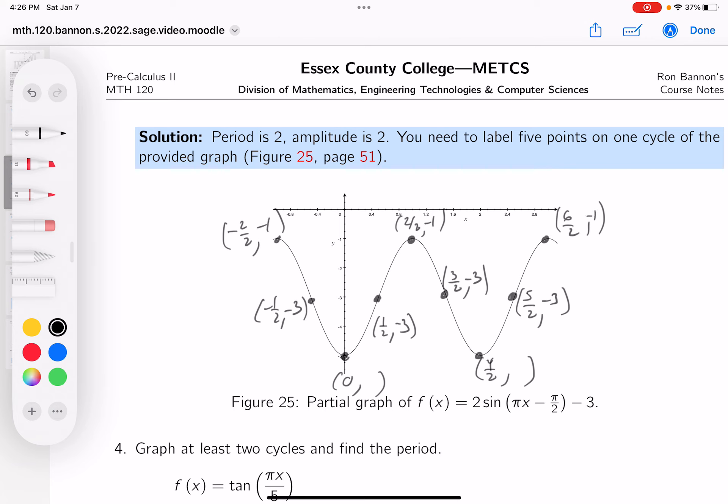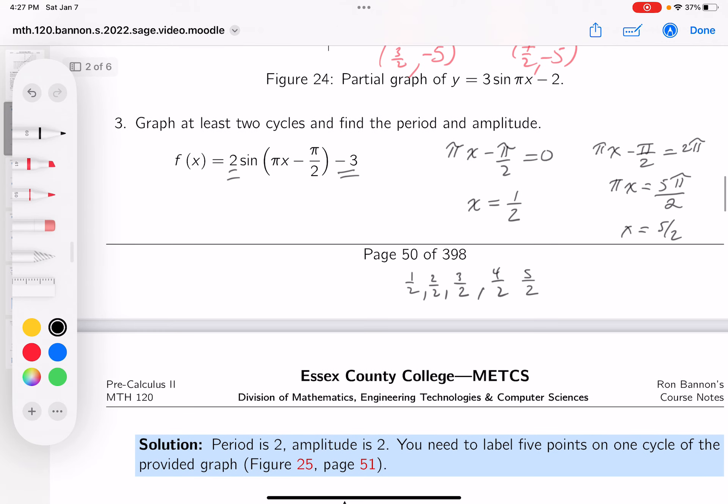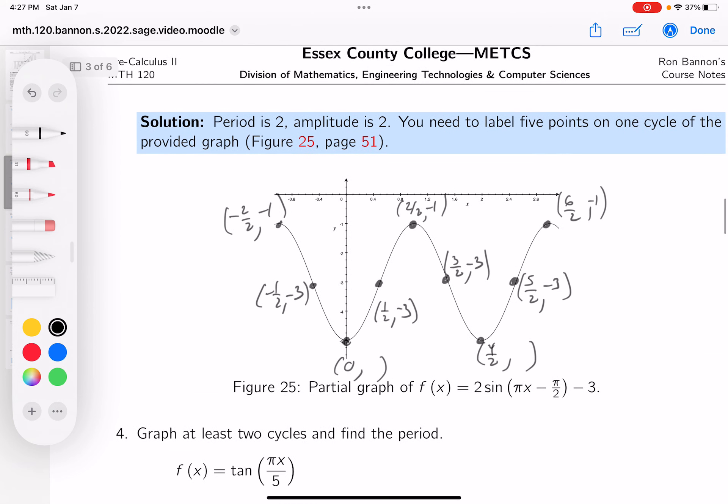All right. Let's do the other number, which is 4 halves. All right. What happens at 4 halves? Well, that would be 3 pi over 2. The sine of 3 pi over 2 is minus 1. And that would give you minus 2 minus 3, which is minus 5.